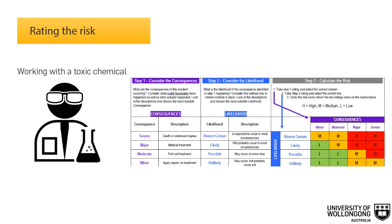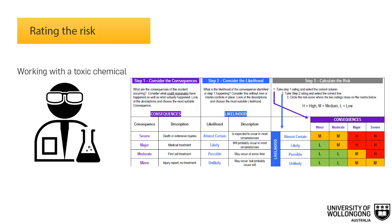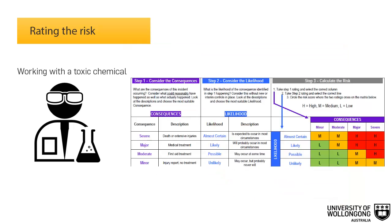Let's work out the level of risk for working with a toxic chemical, using methanol as an example. Consider the consequences of working with methanol — when working with chemicals, you need to refer to the safety data sheet, which will provide information about the hazards including any possible injuries or illness that could occur. Methanol is toxic via inhalation, skin contact, and ingestion, and can cause permanent damage to organs and the nervous system. Therefore, the consequence of coming into contact with methanol could be severe.